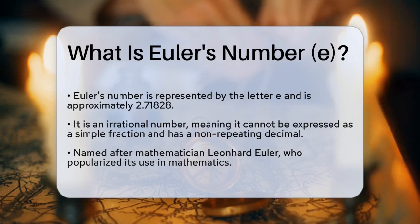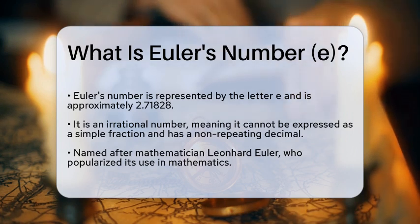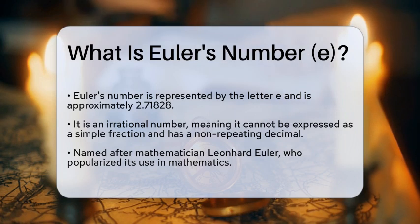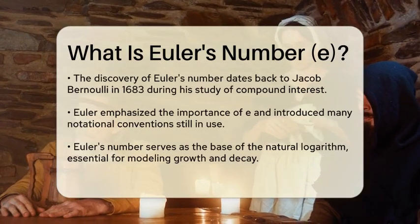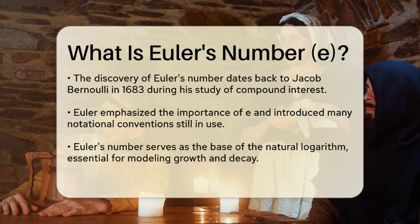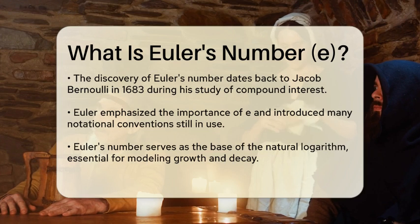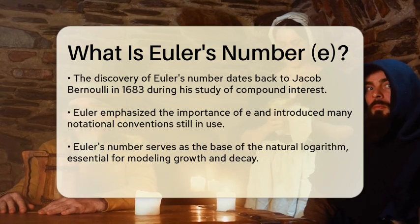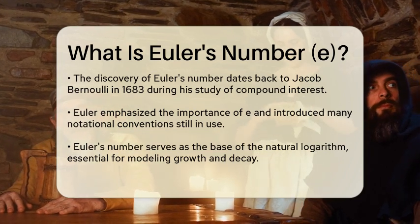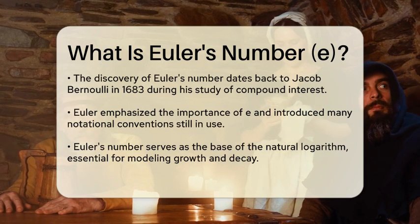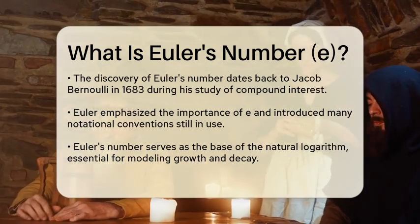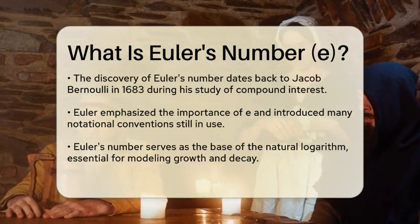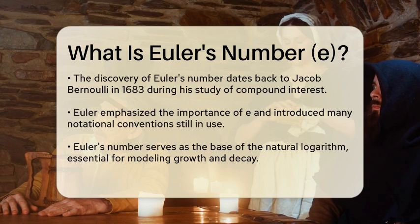Named after the brilliant mathematician Leonhard Euler, this number has a significant place in various fields. Euler made numerous contributions to mathematics, and his work helped popularize the use of e. The discovery of Euler's number can be traced back to Jacob Bernoulli in 1683, who was studying compound interest when he stumbled upon this remarkable constant. However, it was Euler who truly highlighted its importance and introduced many notational conventions we still use today.